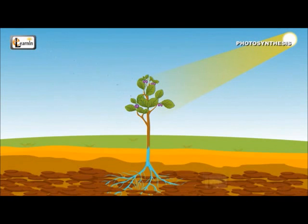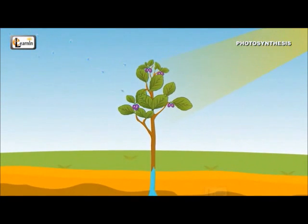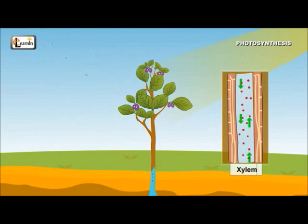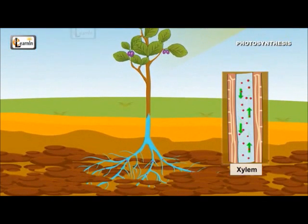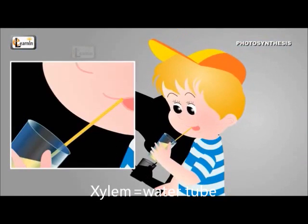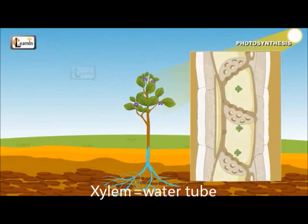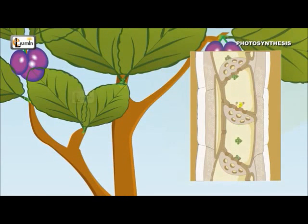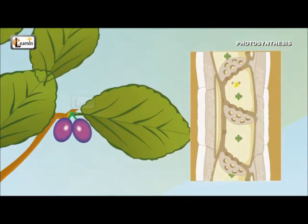Plants have tubes called xylem, located in the stems, through which water from the ground is sucked into the leaves. This system works similar to humans sucking liquids through a straw. The xylem is spread throughout the different parts of the plant, including the stem, branches, and all the way up to the leaves.